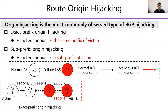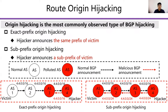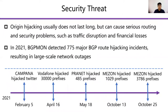In exact prefix Origin Hijacking, the hijacker announces the same prefix of the victim and redirects normal routes. In sub-prefix Origin Hijacking, the hijacker announces a sub-prefix of the victim, which can pollute the entire internet since a more specific prefix is preferred in BGP. Origin Hijacking usually doesn't last long but can cause serious routing and security problems, such as traffic disruption and financial loss.